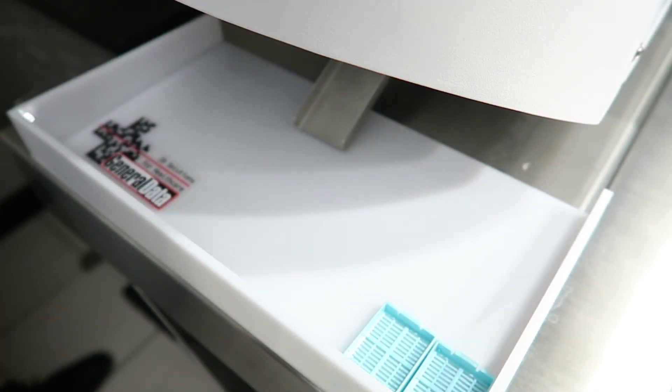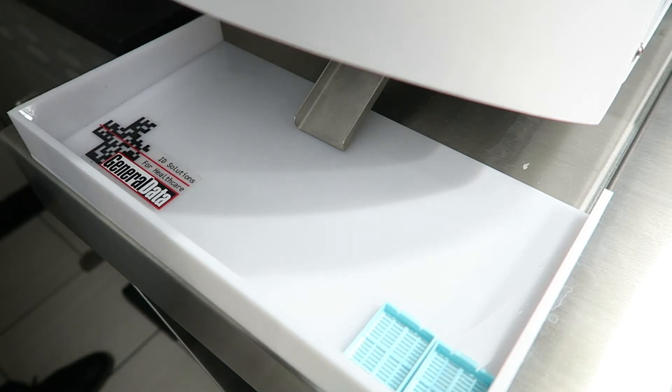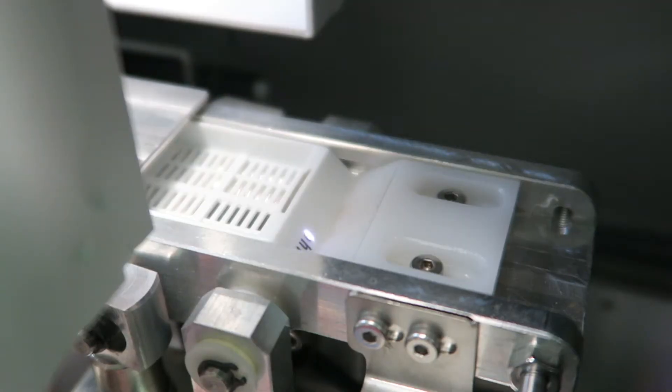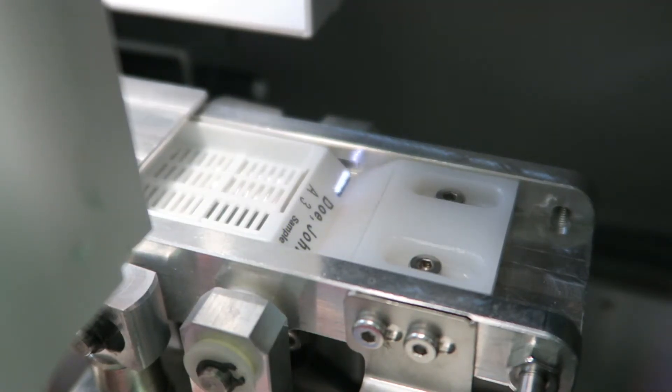The PH6 prints cassettes at a rate of about 1 every 3 seconds. The simple internal feeding mechanism greatly reduces the possibility of cassettes jamming in the printer.